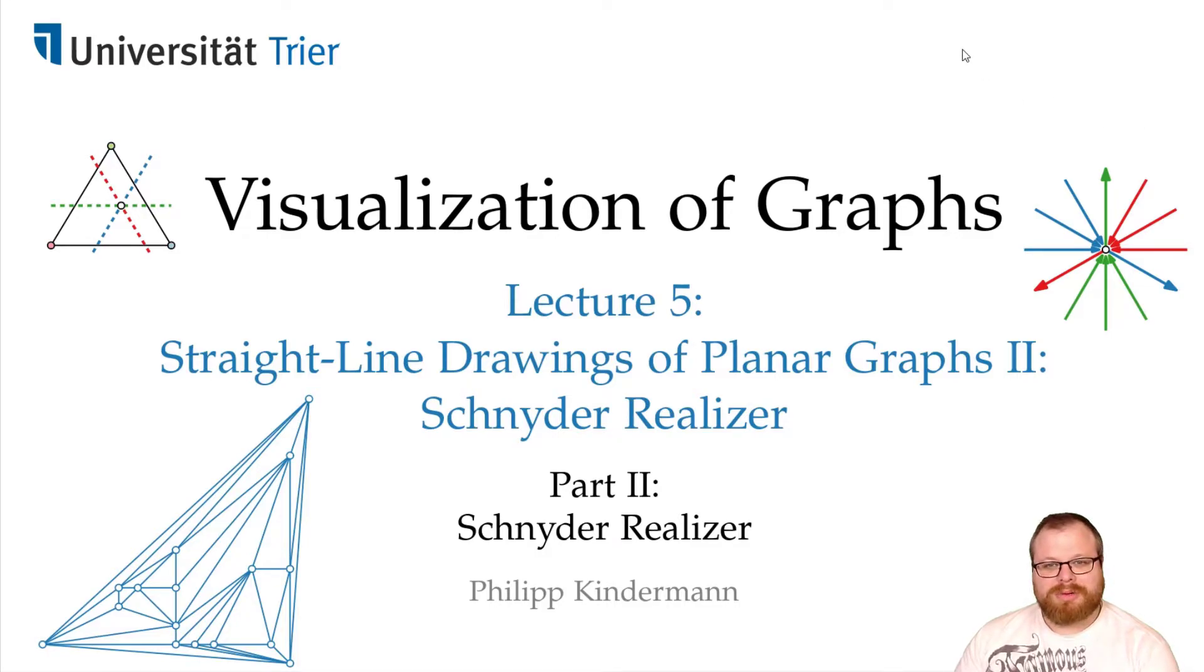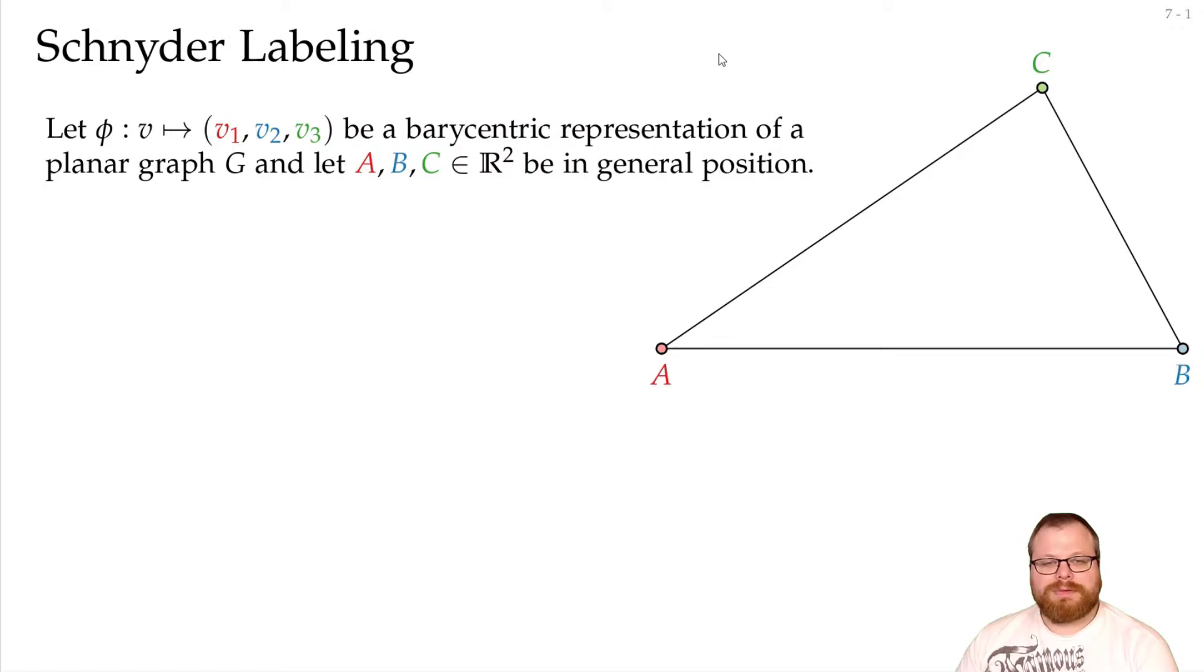Before we can find a barycentric representation for our graph, we first want to find a so-called Schnyder Realizer. For a Schnyder Realizer, we first need a Schnyder labeling. So, let's say that we have some barycentric representation of a planar graph, and we have some triangle inside here.